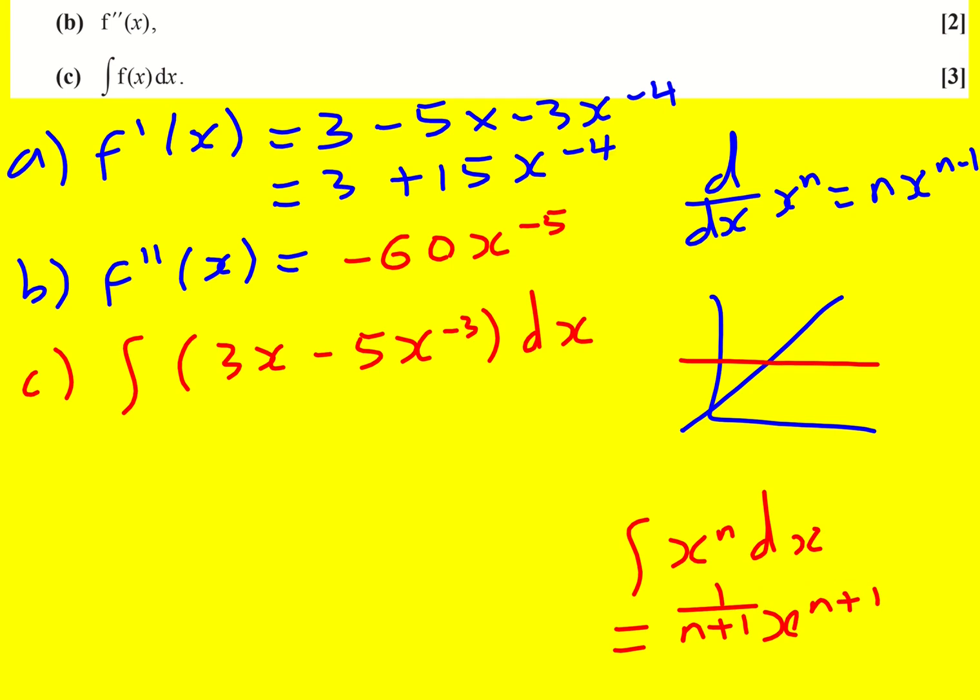If I differentiated this back, you'd see I would times by n plus 1, which would cancel that out, and I'd reduce the power so I'd get back to x to the n. I just have to remember that I also have to add on a plus c. That's really important.